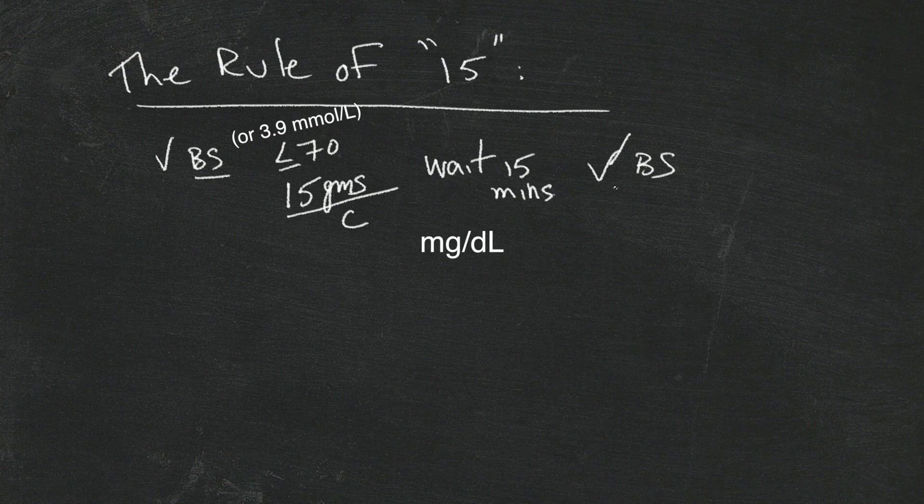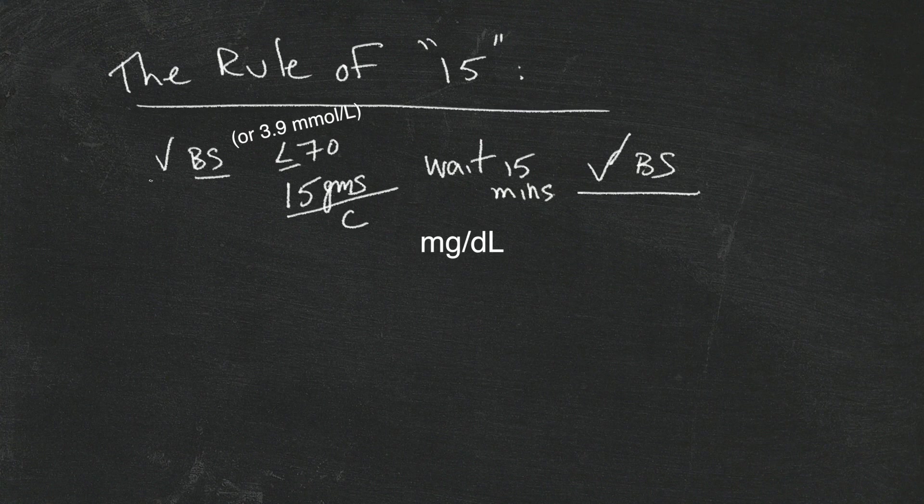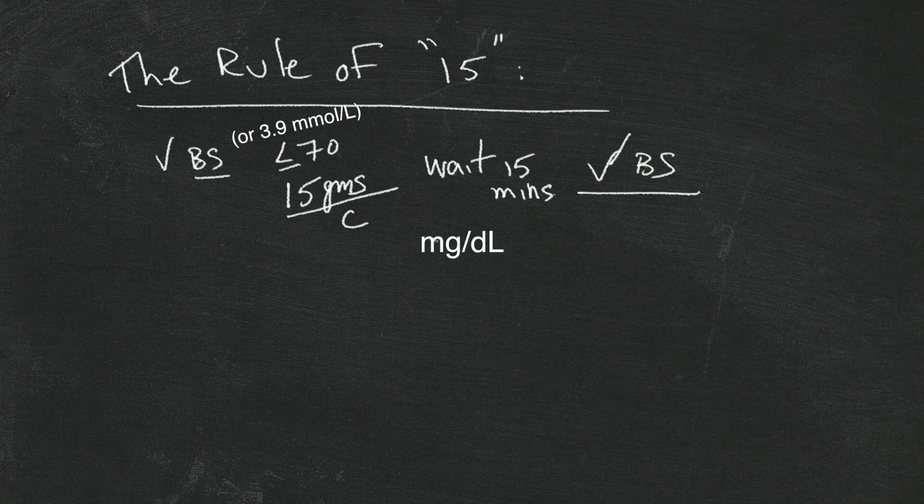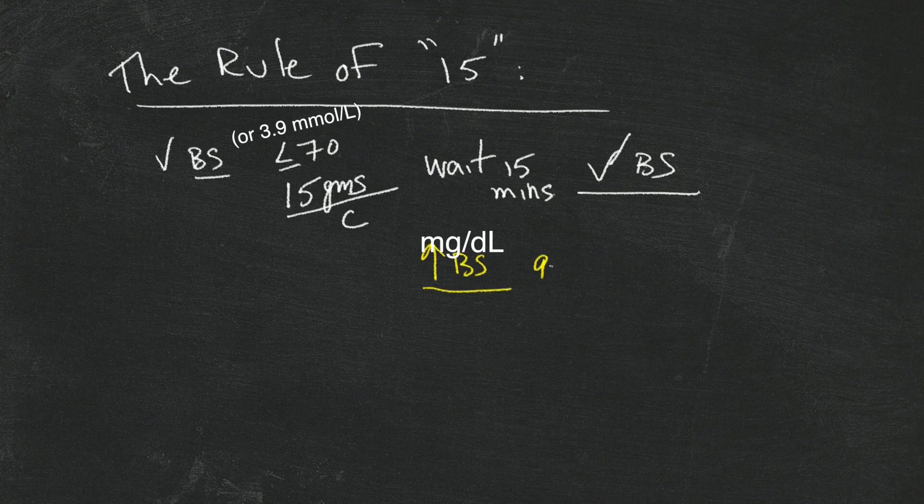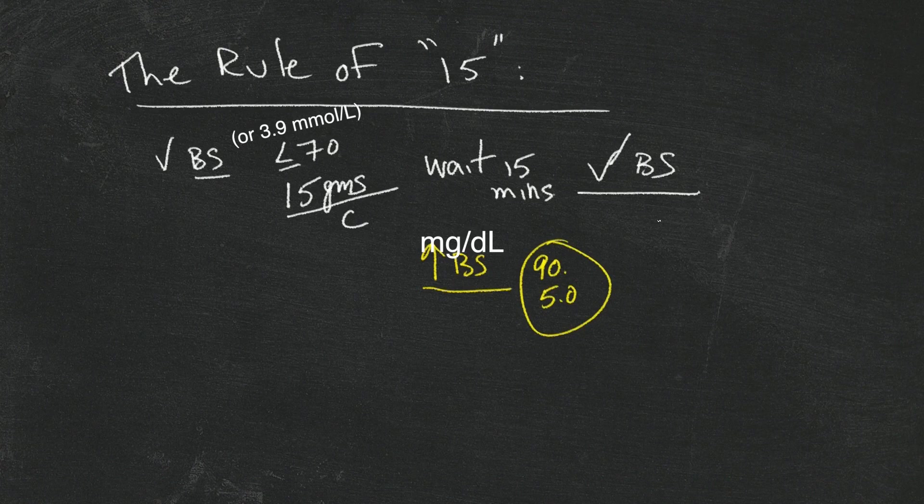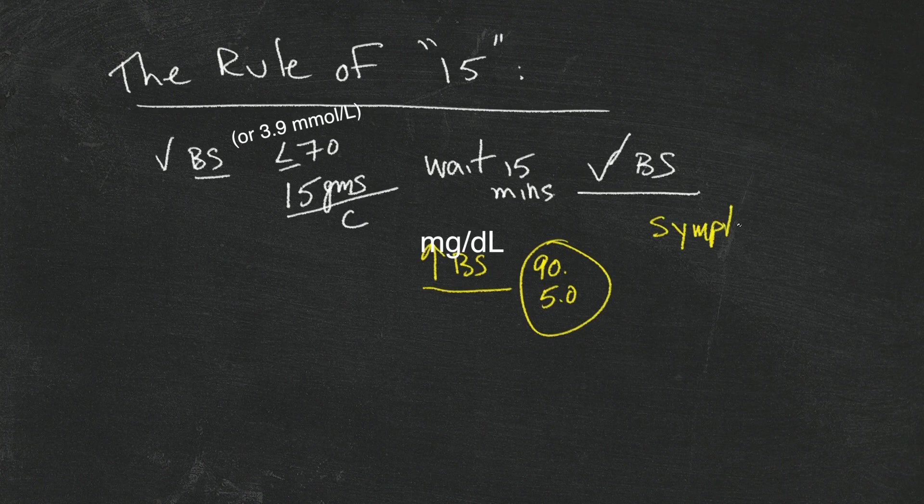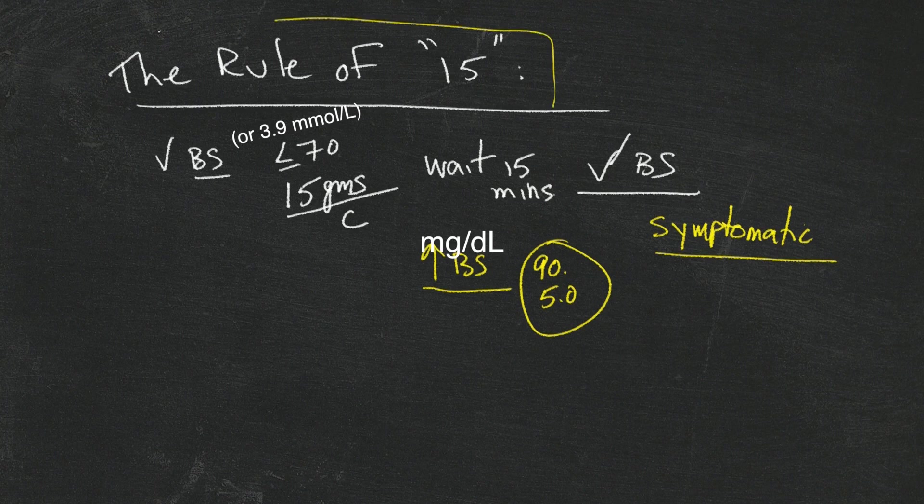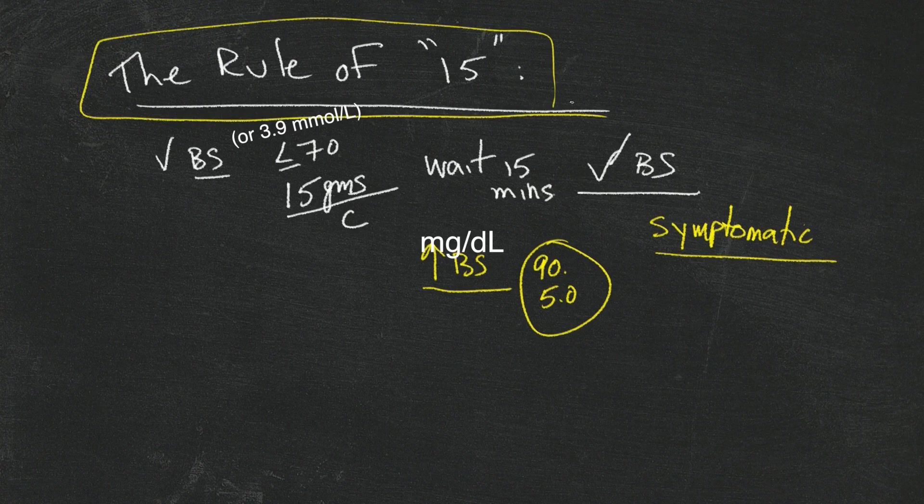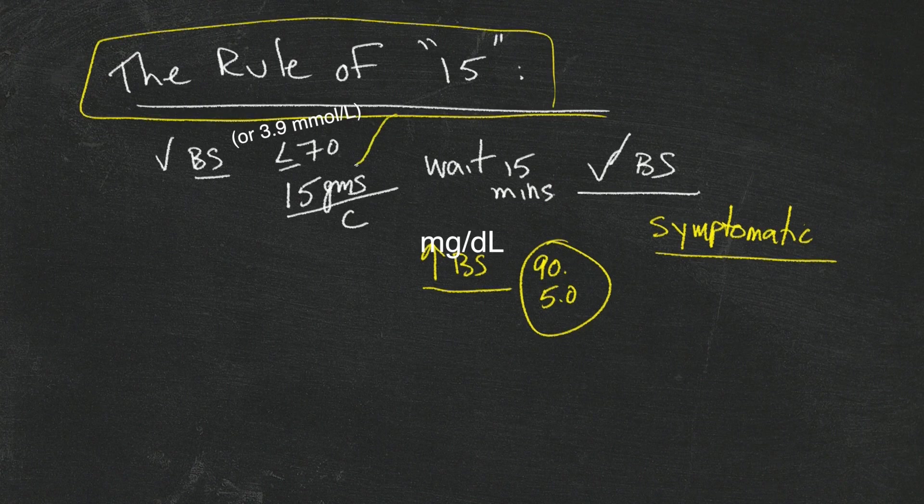If you're 70 or below, take 15 grams of carbohydrate, wait 15 minutes, and check again. Why? Because all of us with diabetes know that sometimes what ends up happening is that even when our blood sugar comes back up and we're back at 90 or 5.0, we still feel symptomatic. It takes a while for the symptoms to go away. And what the rule of 15 helps us with is to make sure that we stay on track and treat the blood sugar, not the symptom.